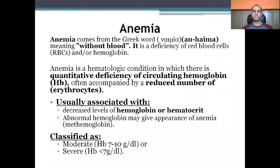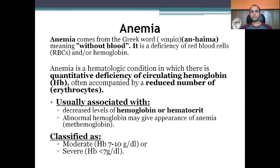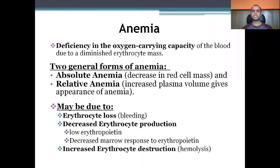We call it a hematologic condition in which there is a quantitative deficiency of circulating hemoglobin, often accompanied by a reduced number of erythrocytes. It is usually associated with decreased hemoglobin or hematocrit. Abnormal hemoglobin, as in methemoglobinemia, may also give the appearance of anemia. It may be classified as moderate if the hemoglobin level ranges from 7 to 10 g/dL.